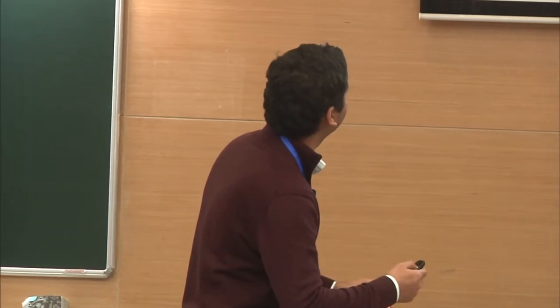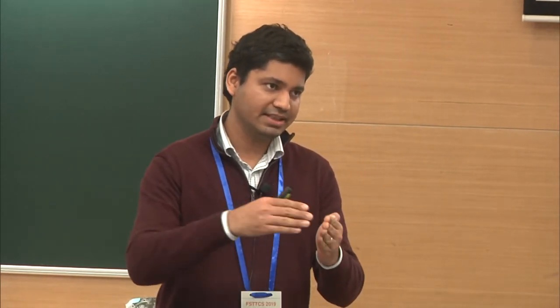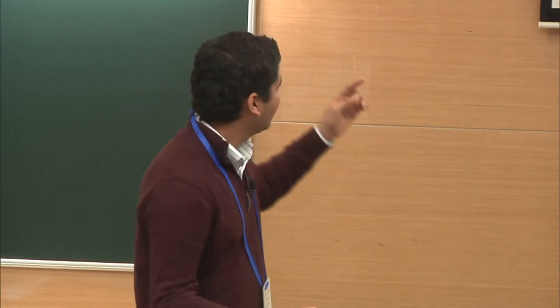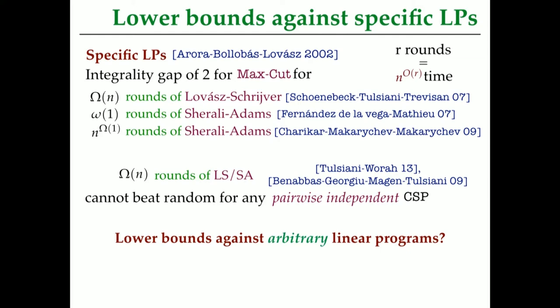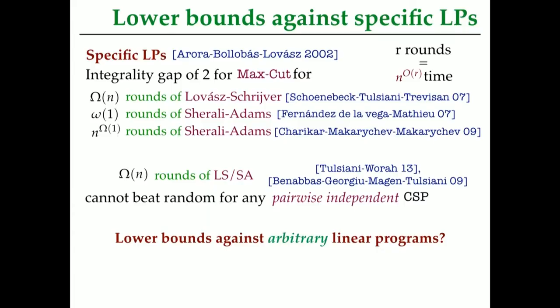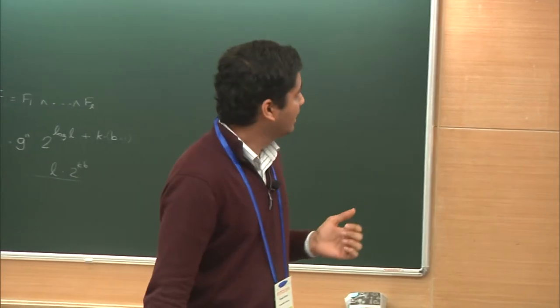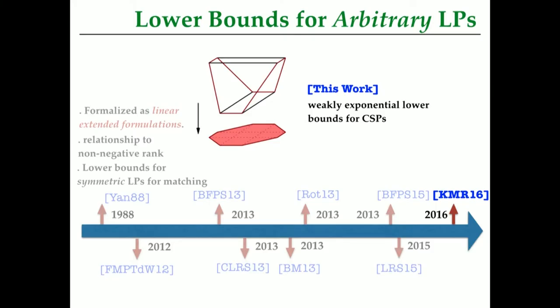These are not single LPs, but a hierarchy of LPs. For every number R, which we call rounds, there is an N to the R size LP corresponding to it of Sherali-Adams type or Lovász-Schrijver type. Think of R as defining N to the R or N to the O of R size LP. You're supposed to think of omega N rounds as meaning 2 to the omega N size LPs. A lot has happened since 2012 in this direction, and this work is going to be about proving exponential lower bounds for approximating constraint satisfaction problems, of which MaxCut etc. are examples.